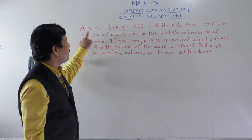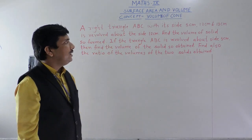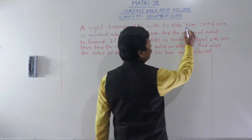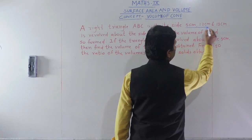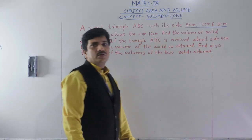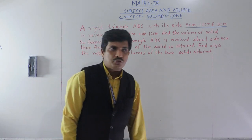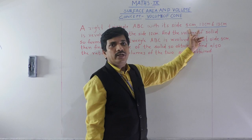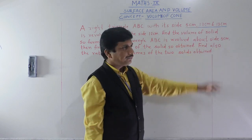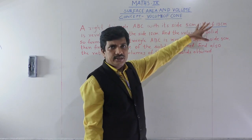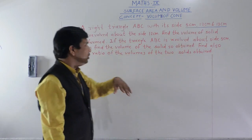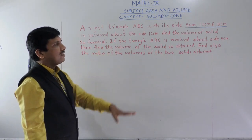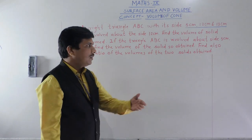If the triangle ABC is revolved about the side 5 cm, find the volume of the solid so obtained. Also find the ratio of the volumes of the two solids obtained. Let me read this once more so we understand what we need to do. Three sides are given.